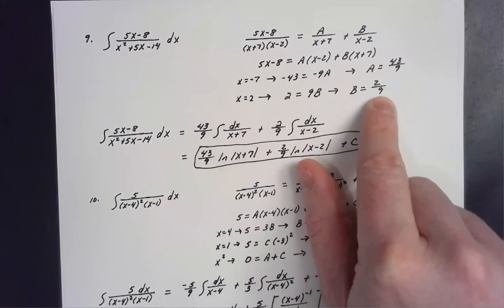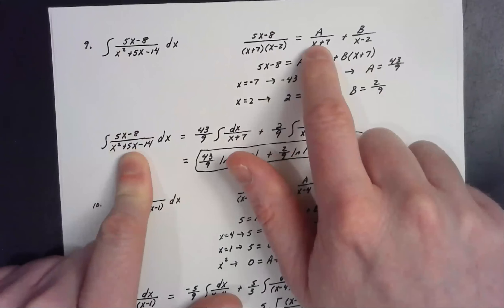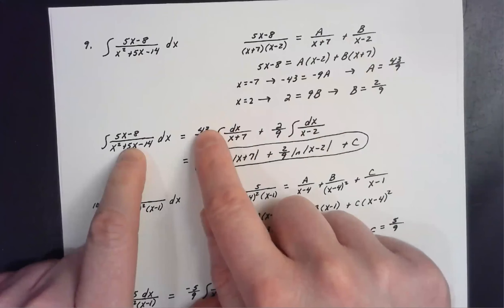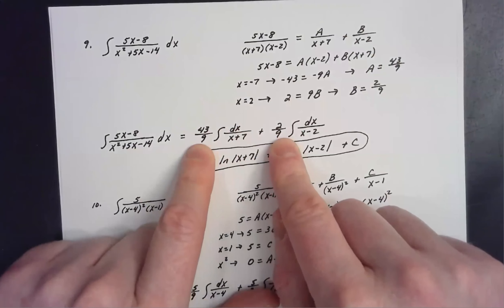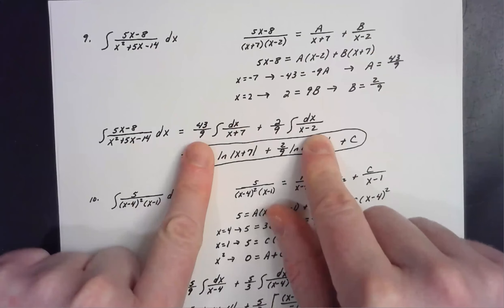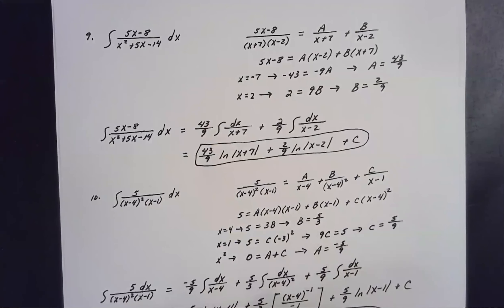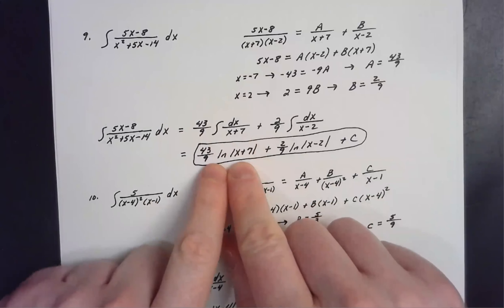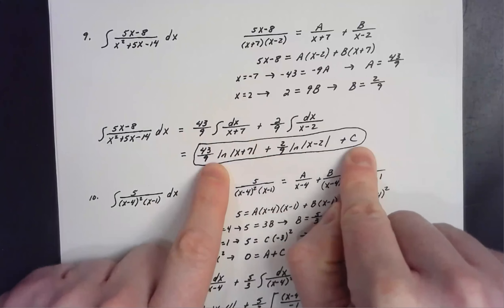Now that we have A and B, the original integral becomes the integral of A over (x + 7) plus B over (x − 2). Factoring the coefficients out front, I get 43/9 times the integral of dx over (x + 7), plus 2/9 times the integral of dx over (x − 2). Every time the derivative of the denominator appears in the numerator, the answer is the natural log of the absolute value of that denominator.